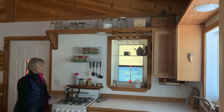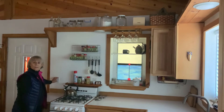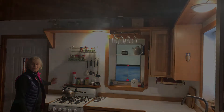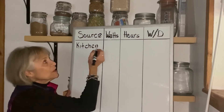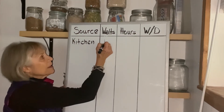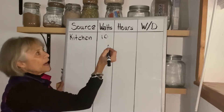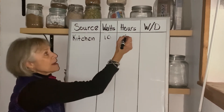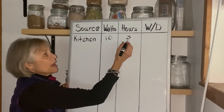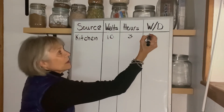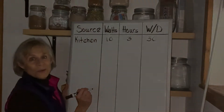Let's start with our kitchen lights. The labels say they each use 5 watts. I've written down my kitchen lights — two of them at 5 watts, that's 10 watts total. I use them about three hours a day. So watts times hours equals 30 watts per day. Simple.